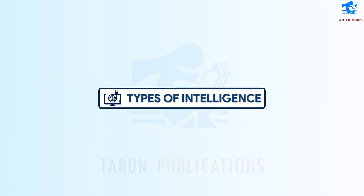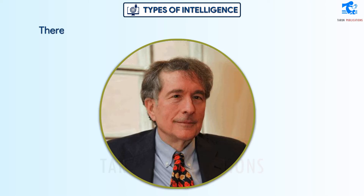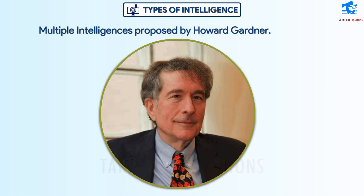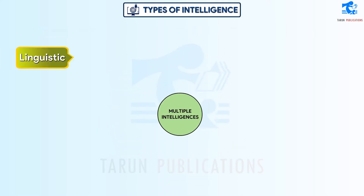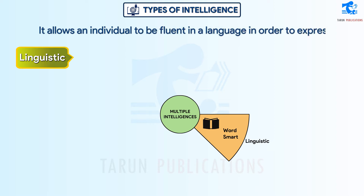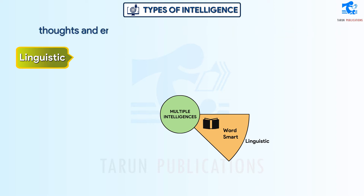There are eight types of intelligence according to the theory of multiple intelligences proposed by Howard Gardner. Linguistic intelligence allows an individual to be fluent in a language in order to express thoughts and emotions.